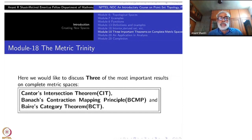So one of them is Cantor's intersection theorem. The second one is Banach's contraction mapping principle. The third one is Baer's category theorem. You can call all of them as principles. High status of a theorem is to become principle.